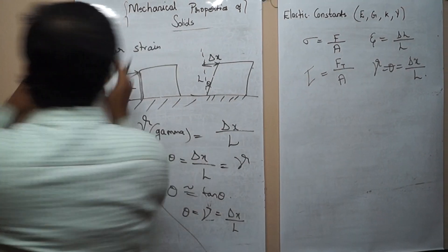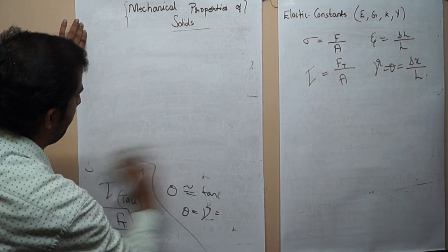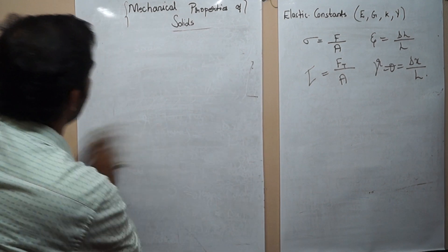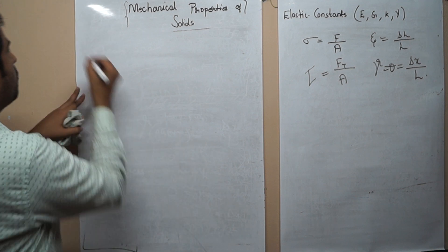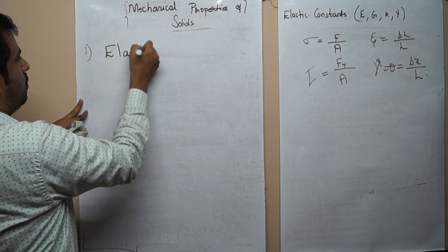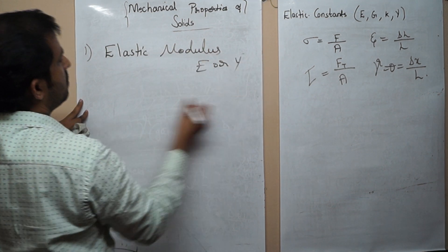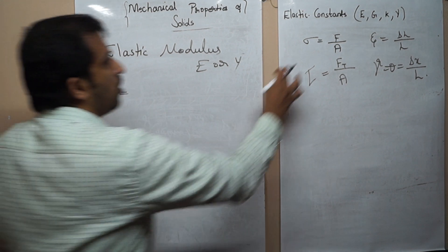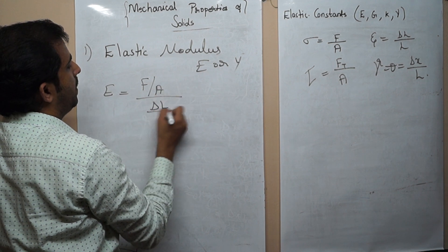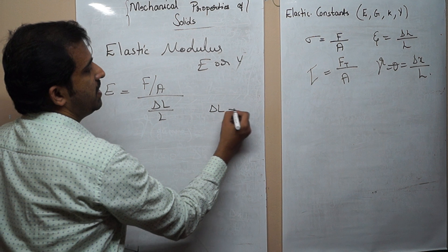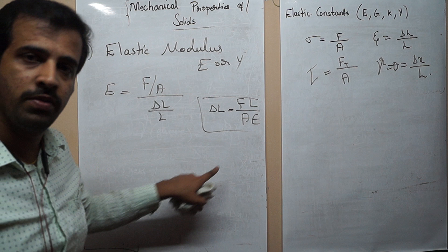Now we can look at the three types of modulus. The first is elastic modulus, also denoted E or Y. Elastic modulus E equals normal stress divided by normal strain, which is (F/A) divided by (delta L/L). Rearranging, the elongation delta L equals F times L divided by A times E. This equation is very important for solving problems.